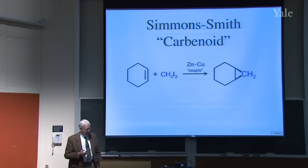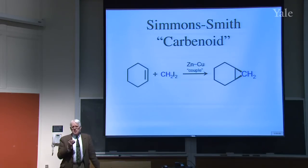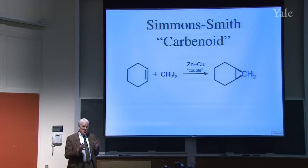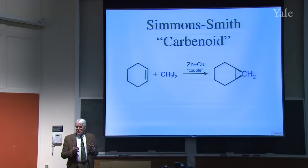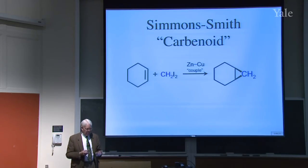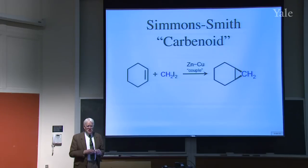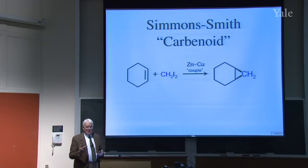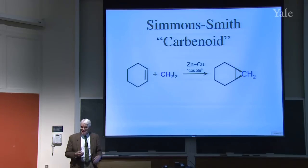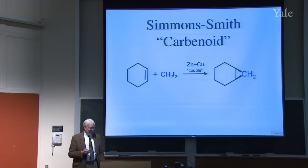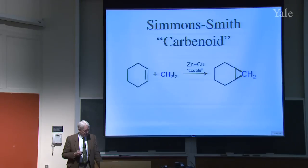First, the so-called Simmons-Smith reagent or a carbenoid. We talked about CCl2, a carbene, last time—that's a free species, pretty reactive but it floats free. These are called carbenoids because they don't really give a free carbene, but they give a product as if it were a carbene—that is, CH2 in a three-membered ring. The reagents are methylene iodide (CH2I2) and a thing called zinc-copper couple. It turned out that having a little copper with the zinc made it work better. Zinc is the operative group, but copper clearly has something to do with it. This was developed at DuPont Central Research in Wilmington, Delaware, where Howard Simmons was the director of research.